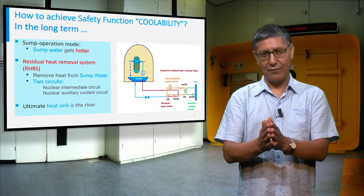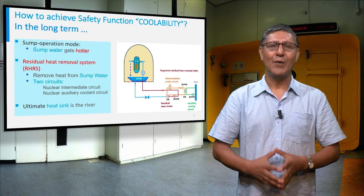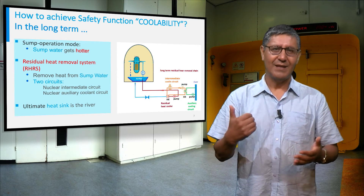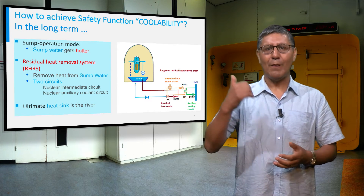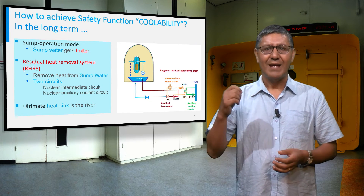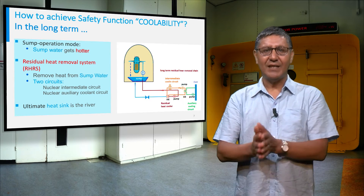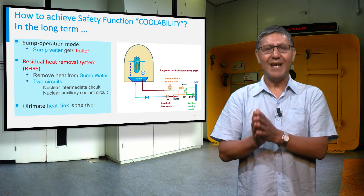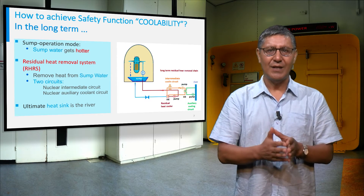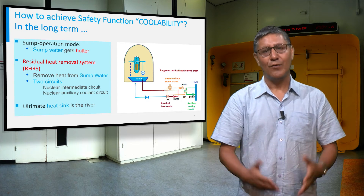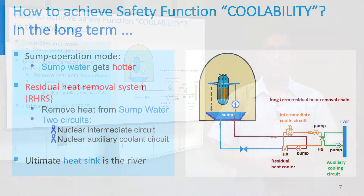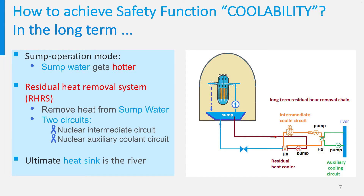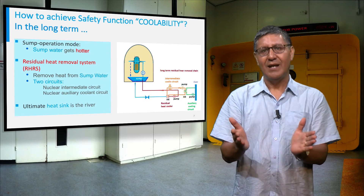The long-term coolability is achieved by the residual heat removal system. Once the flooding tank is empty, the sump operation mode is activated automatically by the reactor control and protection system. Water is injected into the core to remove the heat, and the sump water heats up continuously. The residual heat removal system therefore consists of interconnected circuits with active pumps and heat exchangers to remove heat from the sump water into the final heat sink, which can be a river or an ocean.